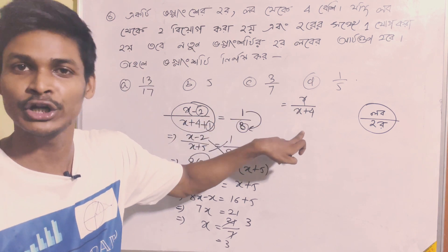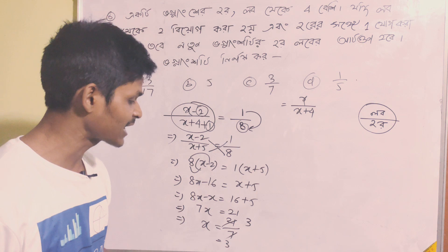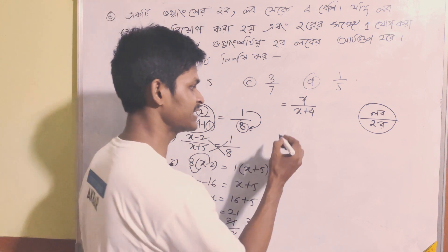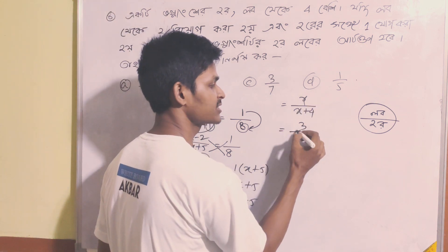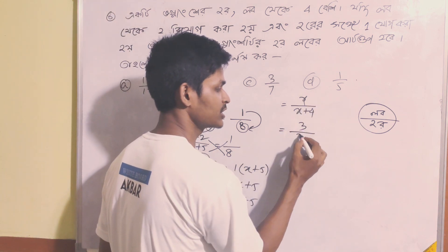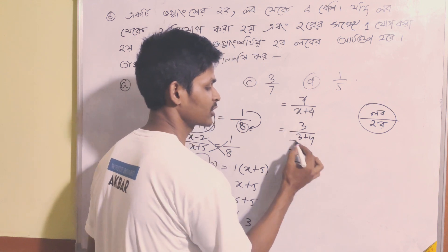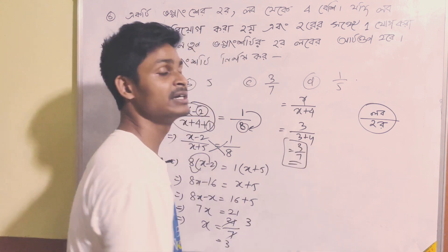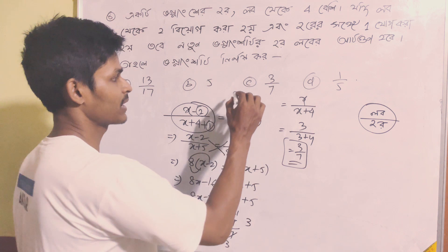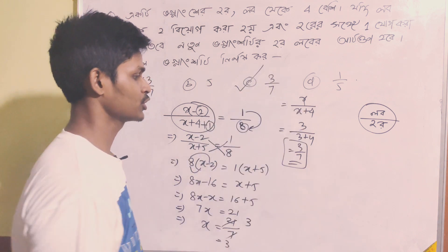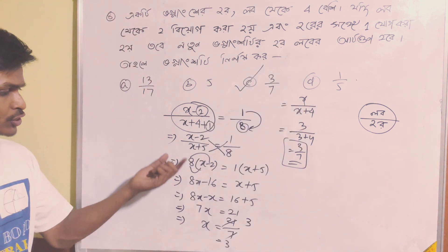The main fraction: the x value gives us 3 plus 4 equals 7. So the correct answer is 3 by 7, option C.